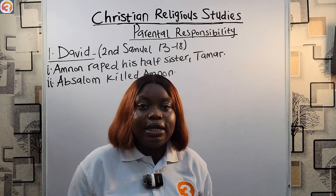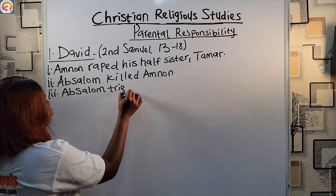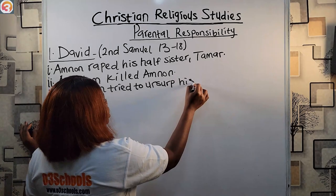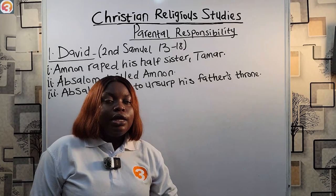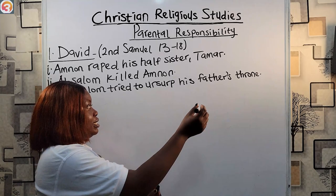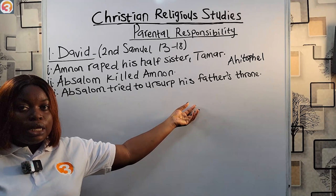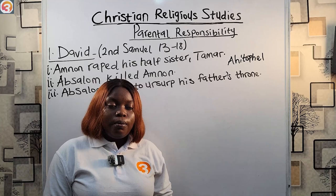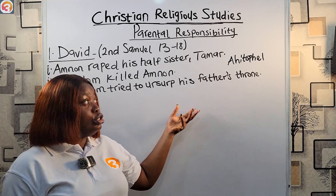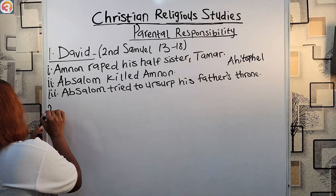Absalom only fled for three years, and by the time David's anger subsided, Absalom returned. Absalom then tried to usurp his father's throne — he charmed his way into the hearts of the Israelites and even got David's advisor Ahithophel on his side. But God delivered David. When David's commanders were going into battle against Absalom, David begged them to deal gently with his son, showing his indulgent love. Even so, they killed Absalom. David lost two sons as a consequence of his lack of parental responsibility.